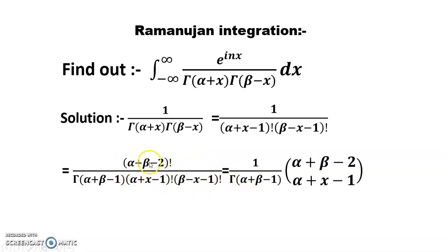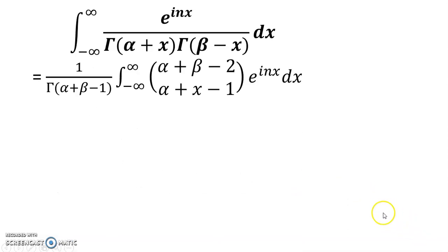After that, 1 over gamma(alpha plus beta minus 1) remains, and the remaining expression can be written as the combination term C(alpha plus beta minus 2, alpha plus x minus 1). So the given integration can be written as 1 over gamma(alpha plus beta minus 1) times the integral from minus infinity to infinity.